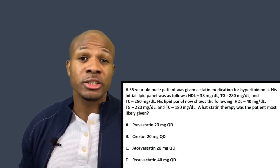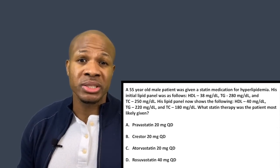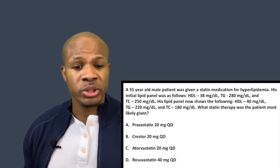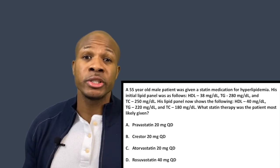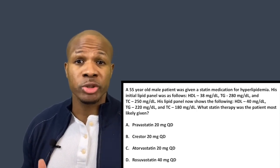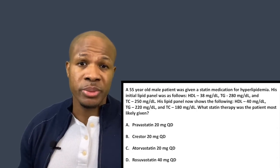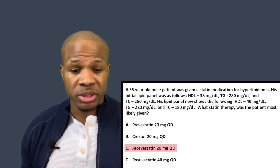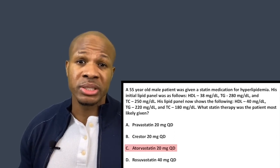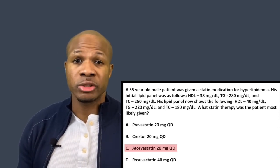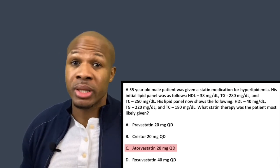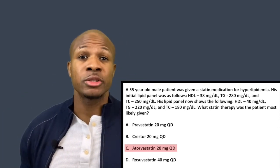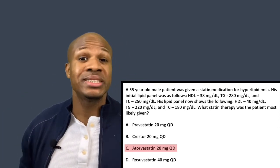So this patient was most likely given a moderate-intensity statin. Looking at the answer choices: choice A, pravastatin 20 daily, is low intensity. Choice B, rosuvastatin 20 (Crestor 20), is high intensity. Choice C, atorvastatin 20 mg, is a moderate-intensity statin — that's the answer. Choice D, rosuvastatin 40, is even higher intensity. The correct answer is C: atorvastatin 20 milligrams daily.